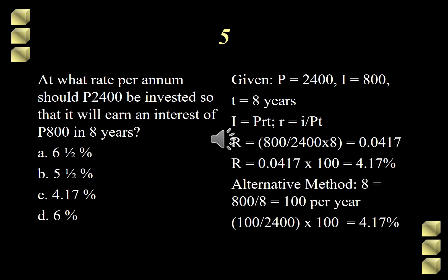Moving on to our fifth and last question in this video. At what rate per annum should 2,400 pesos be invested so that it will earn an interest of 800 pesos in 8 years? The choices are A, 6.5%, B, 5.5%, C, 4.17%, D, 6%. Now, this is a case of simple interest.